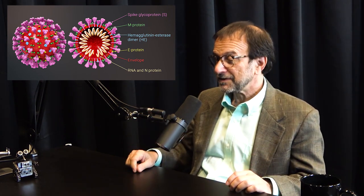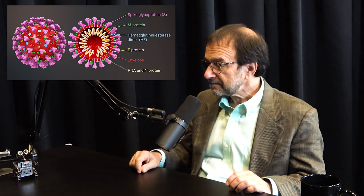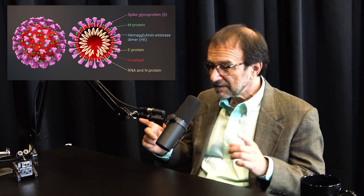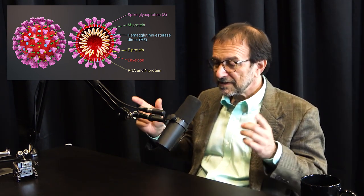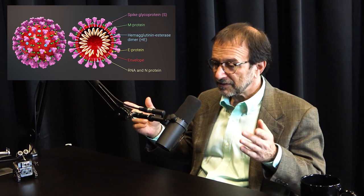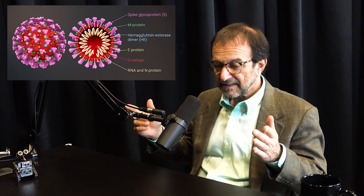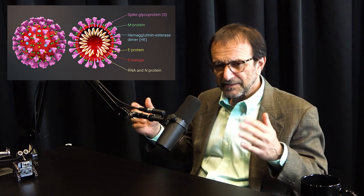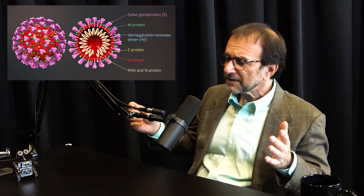Coronaviruses are the viruses with the longest RNA that we know of - none other comes close. For some reason they're able to maintain 30,000 bases. SARS-CoV-2 RNA is 30,000 bases, and some other coronaviruses are even longer - 40,000.